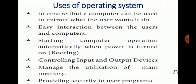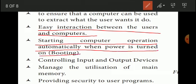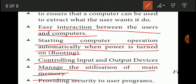The uses of the operating system are: first, to ensure that the computer can be used to extract what the user wants to do; second, easy interaction between user and computer; third, starting computer operation automatically when power is turned on; fourth, controlling input and output devices; fifth, managing the utilization of main memory; and sixth, providing security to user programs. These are the advantages of the operating system.